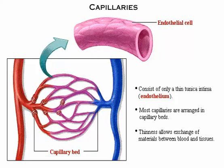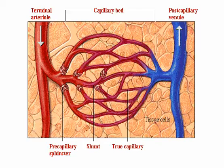Capillaries consist of only a thin tunica intima, allowing exchange of materials between blood and tissues. Blood flow regulation occurs at the capillary beds. The terminal arteriole brings blood to the capillary bed. The shunt is a short vessel that directly connects the feeder arteriole and the post-capillary venule at the opposite end of the bed. Exchanges of materials take place between tissue cells and the blood in the true capillaries. The pre-capillary sphincter is a cuff of smooth muscle fibers that surrounds the root of each true capillary, acting as a valve to regulate the flow of blood into the true capillary.